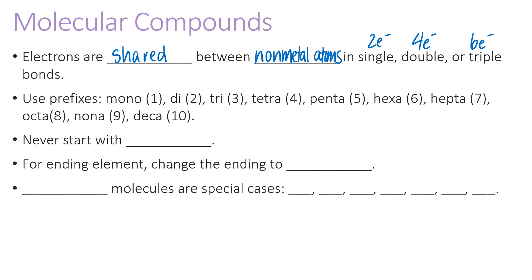When we name molecular compounds, we use prefixes: mono, di, tri, tetra, penta, hexa, hepta, octa, nona, and deca. One important rule is that the first element should not start with 'mono.' The ending element gets changed to end with '-ide,' just like we did for ionic compounds.